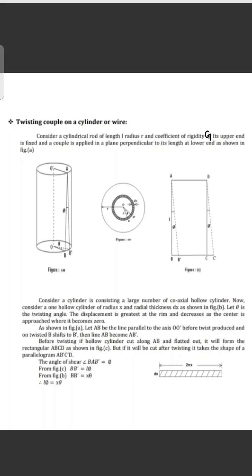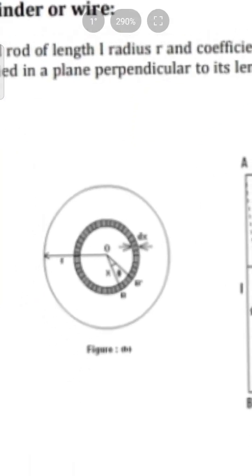Consider the cylinder as consisting of a large number of coaxial hollow cylinders. Consider one hollow cylinder. The radius of this hollow cylinder is x and its thickness is dx, as shown in figure B.